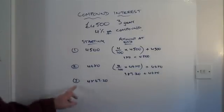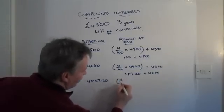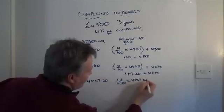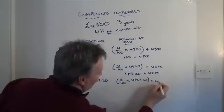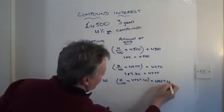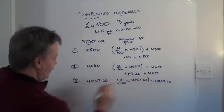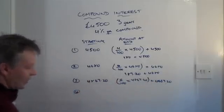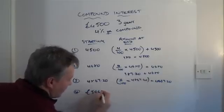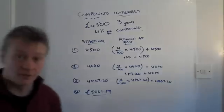So he begins the third year with £4,867. And at the end of the third year he'll have 4% of £4,867. And if you calculate that through at the end of the third year or the beginning of the fourth year he's going to have in his bank account £5,061.89. And that would be the answer to your question.